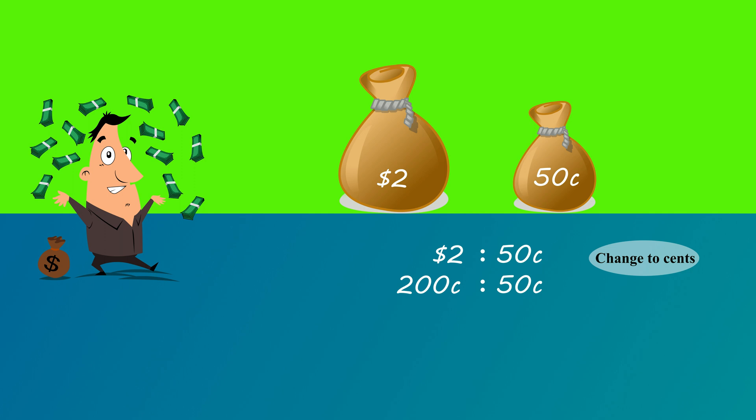Two hundred cents is to 50 cents. Now delete the words. That's 200 is to 50. Both numbers can be divided by 50 to give the final answer of four is to one.